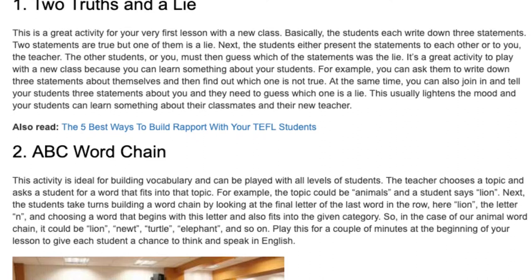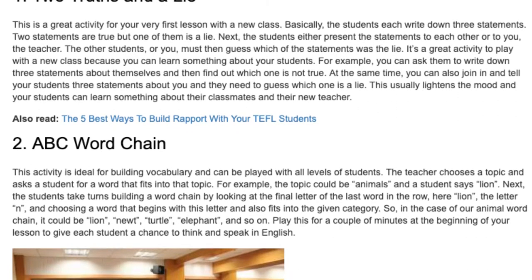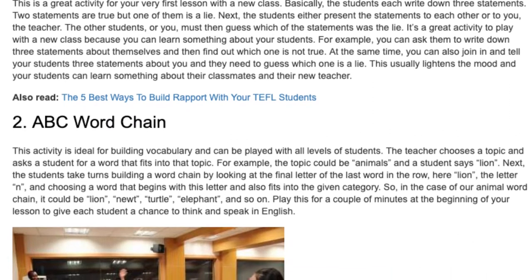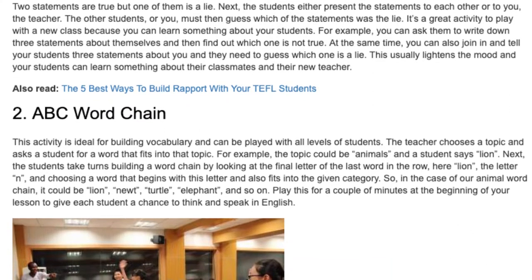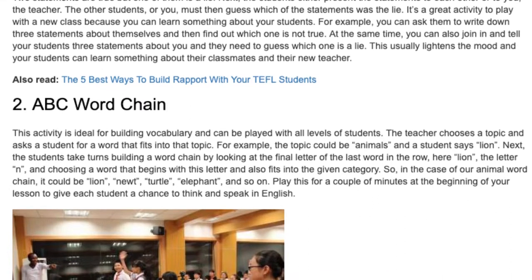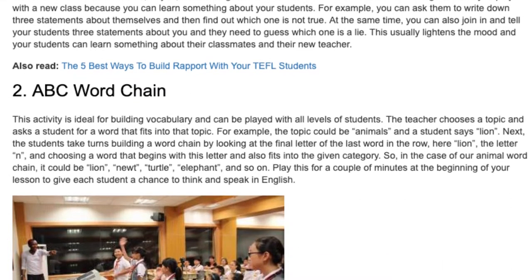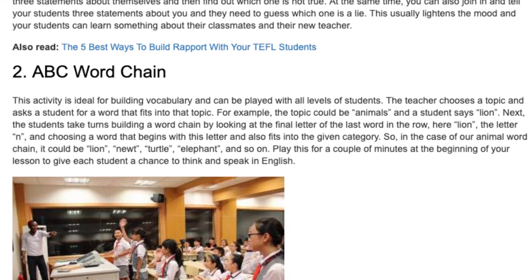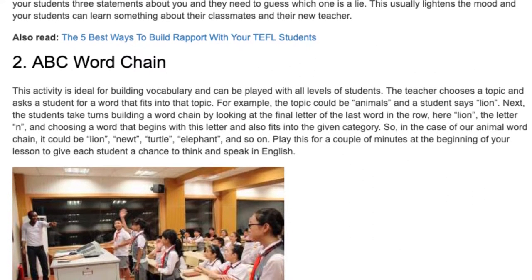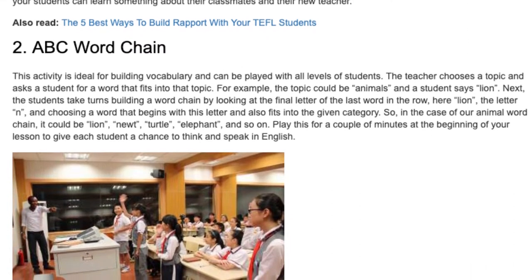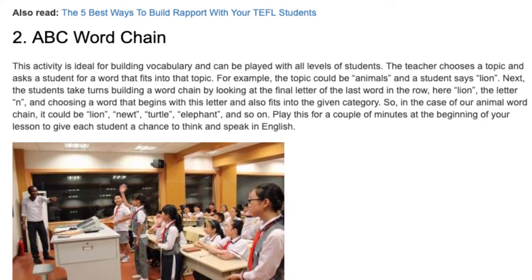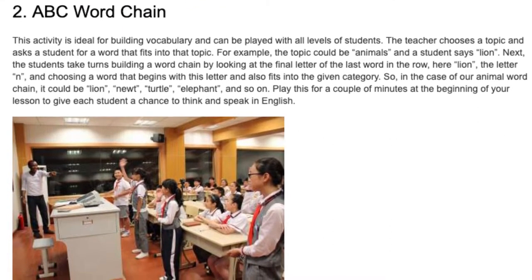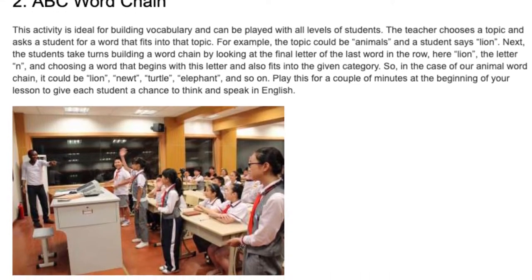ABC Word Chain. This activity is ideal for building vocabulary and can be played with all levels of students. The teacher chooses a topic and asks a student for a word that fits into that topic. For example, the topic could be animals and a student says lion. Next, the students take turns building a word chain by looking at the final letter of the last word — here lion, the letter N.